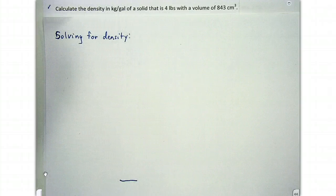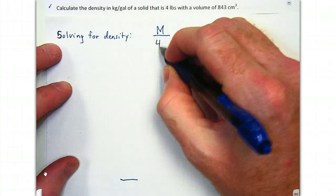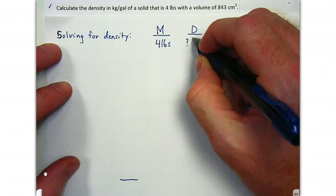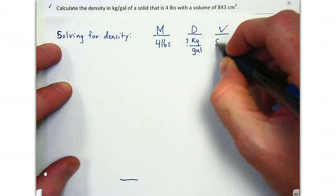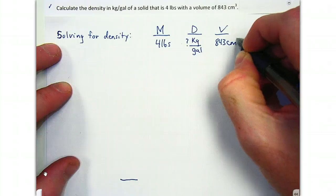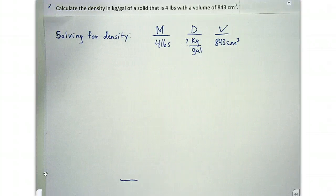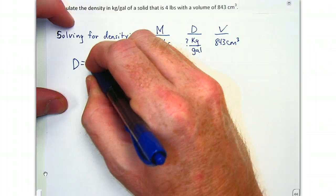The first problem says: calculate the density in kilograms per gallon of a solid that is four pounds with a volume of 843 cubic centimeters. We write down our given from the problem: mass is four pounds, density is unknown with units of kilograms per gallon, and volume is 843 cubic centimeters. When solving for density, we use the given mass and volume, so we put mass over volume — D equals M over V.